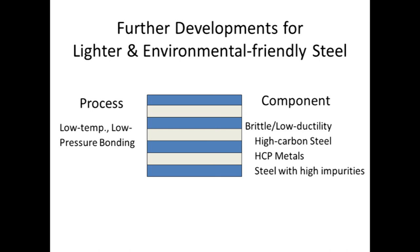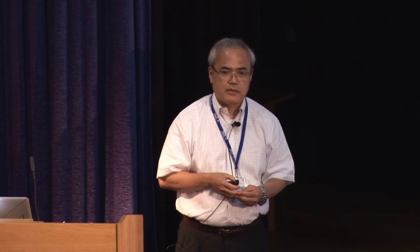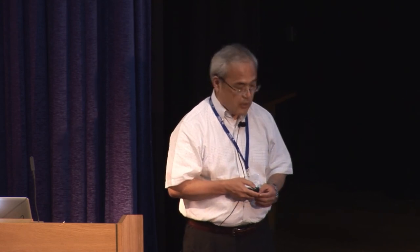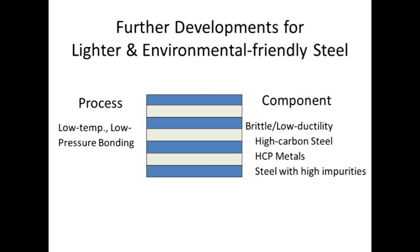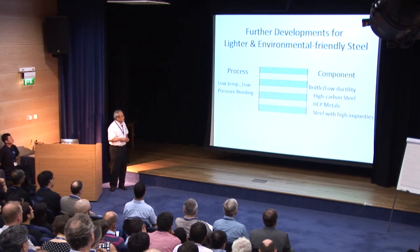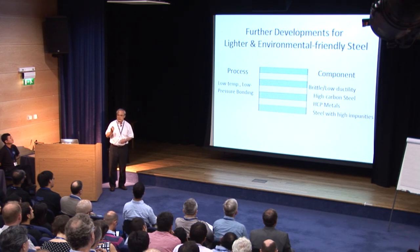For further improvement of multi-layer steels, we need to improve the process. We are looking at lower temperature and lower pressure bonding, which makes fabrication much easier and more efficient. In terms of components, not only are we using high-carbon martensitic steels, but we are also using HCP metals such as magnesium and titanium to achieve lighter multi-layer steels. We are also using high-impurity steels, such as scrap steel, so that we can use scrap to fabricate high-performance steels.